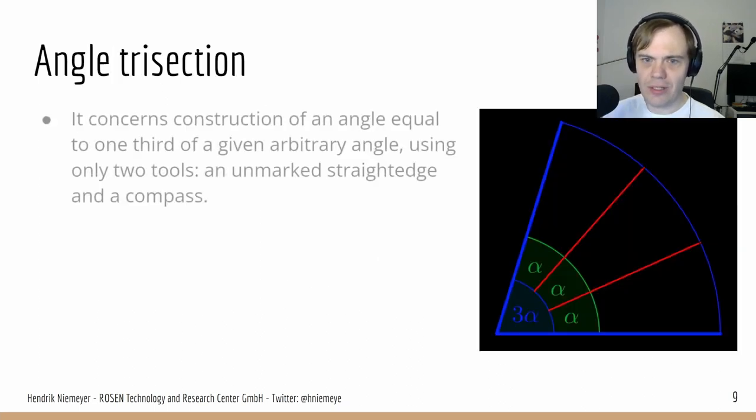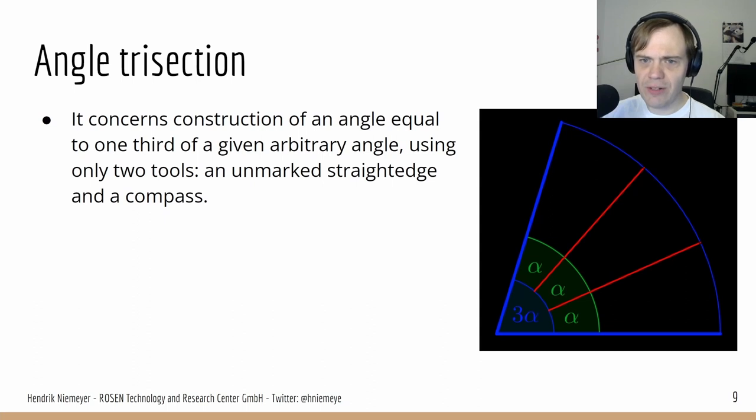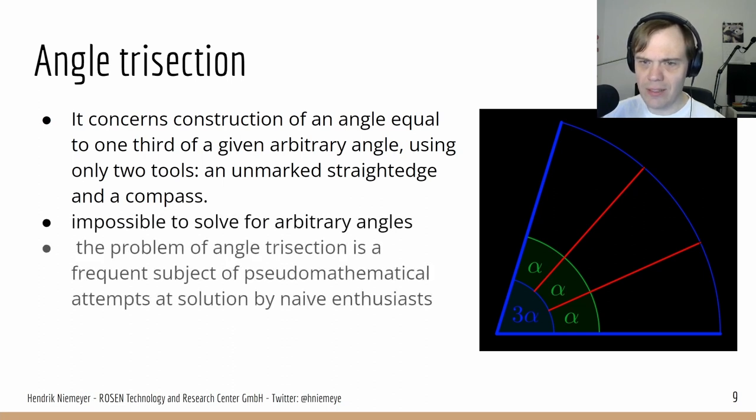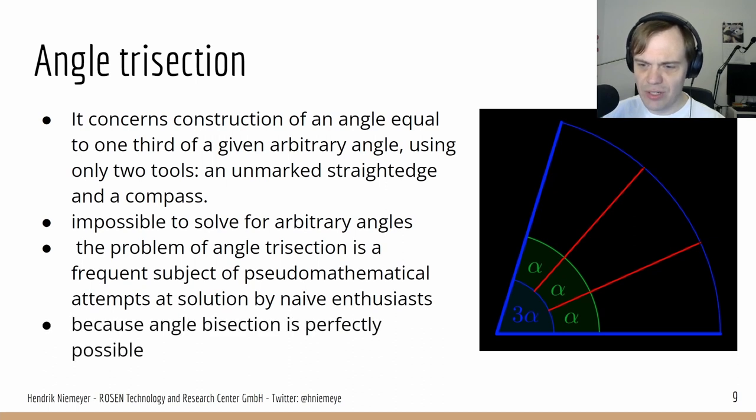Angle trisection: constructing an angle equal to one third of a given arbitrary angle using only an unmarked straight edge and a compass. Impossible to solve for arbitrary angles. This is something a lot of people won't accept and try to disprove. Because angle bisection is possible, but trisection is not, very surprising.